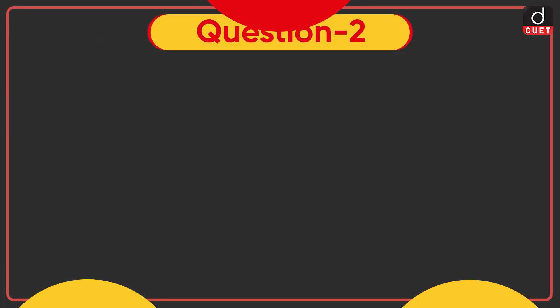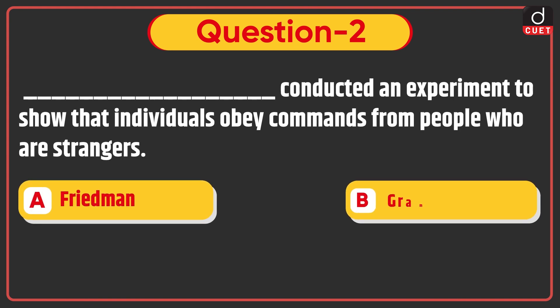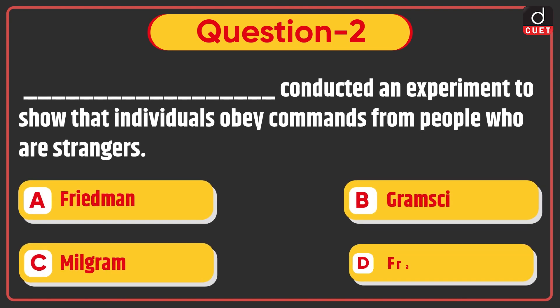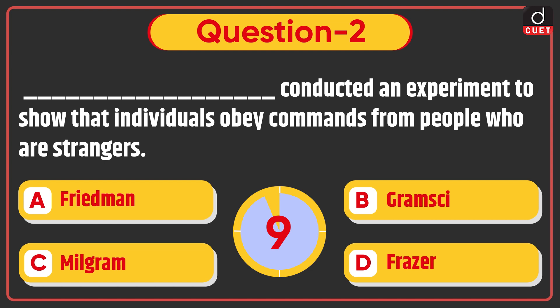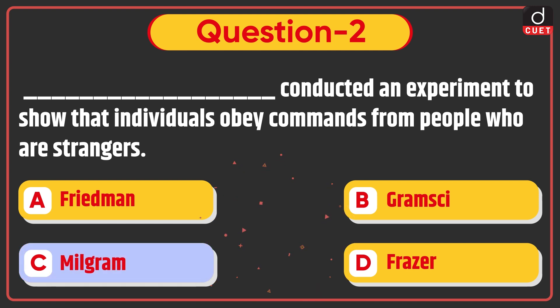Next question: Who conducted an experiment to show that individuals obey commands from people who are strangers? — Friedman, Gramsci, Milgram, or Fraser? The correct answer is Option C, Milgram.